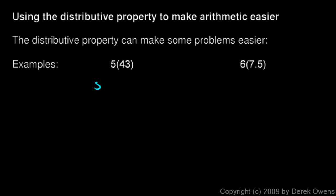But watch this, instead of 5 times 43, I could think of this as 5 times 40 plus 3. Because 43 here is clearly the same as 40 plus 3. And so that's going to be 5 times 40 plus 5 times 3. And 5 times 40 is 200, and 5 times 3 is 15, and that's 215. So without a calculator, I did that.